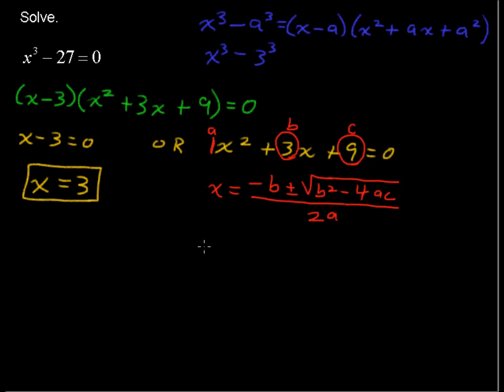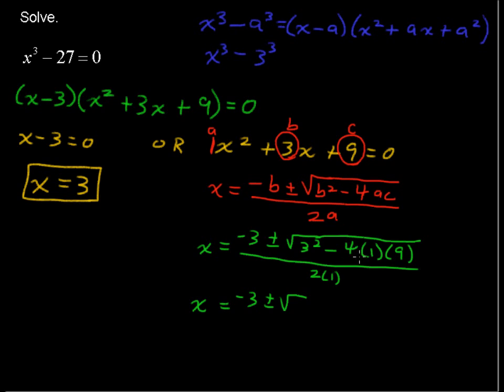x equals the opposite of 3, so negative 3 plus or minus the square root of 3 squared minus 4 times a is 1, times c is 9, all over 2 times a, so all over 2 times 1. And simplifying we get negative 3 plus or minus the square root of 9 minus 36. 9 minus 36 is negative 27, all over 2.